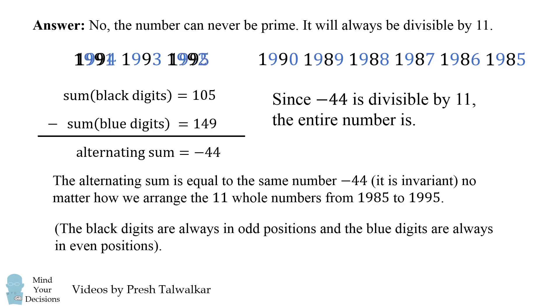So let's say we rearrange the numbers like this. Well, the alternating sum is still going to be the same, because the black digits are always in the odd positions, and the blue digits are always in the even positions.